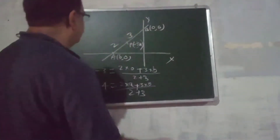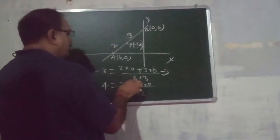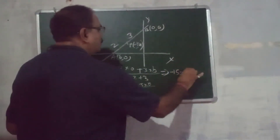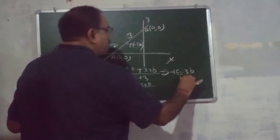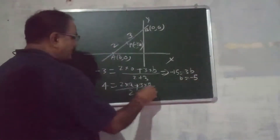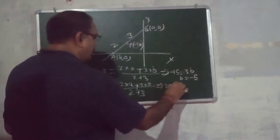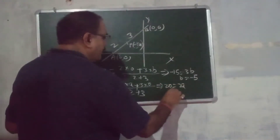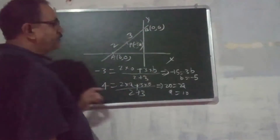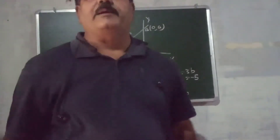When we solve using the x-coordinate: 2×0 + 3×b divided by 2+3 = -3, which gives 3b = -15, so B is equal to -5. And for y-coordinate: 3×0 + 2×a divided by 5 = 4, which gives 2a = 20, so A is equal to 10. Therefore B equals -5 and A equals 10. This is the answer.